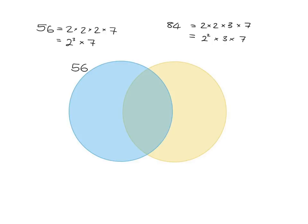What we're going to use this Venn diagram for is to help us summarize what we've found. Into this blue circle, we're going to put everything that belongs to 56, and into the yellow circle, we're going to put everything that belongs to 84. And into this section here, where the blue circle and the yellow circle meet, we're going to put things that belong to both of them.